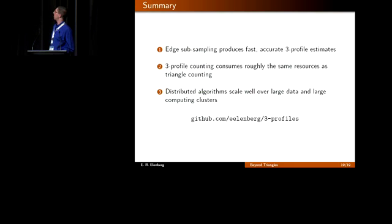Wrapping up, we've shown a provably accurate edge subsampling scheme that produces fast, accurate estimates of this global three-profile. We've shown that local three-profile counting consumes roughly the same number of resources as local triangle counting. We've also shown that our distributed algorithms scale well with increasing problem size as well as increasing cluster size. There are hopes for future work to use larger subgraphs like the four-profile as well as finding applications, either applications where graphlets or triangle counting is useful or new applications. Our code is available on GitHub. I'm happy to answer any questions.